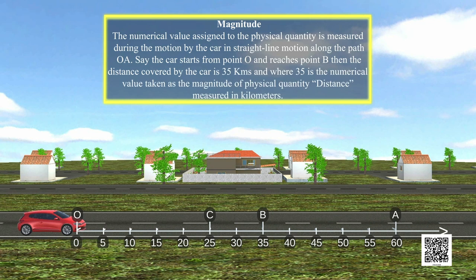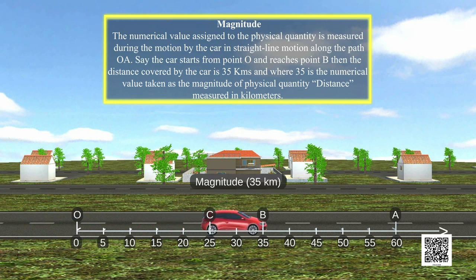Magnitude: The numerical value assigned to the physical quantity is measured during the motion by the car in straight line motion along the path OA. Say, the car starts from point O and reaches point B. Then, the distance covered by the car is 35 kilometers.